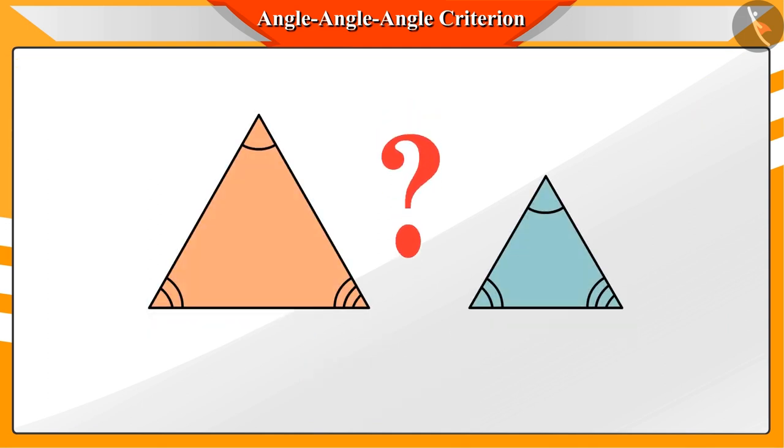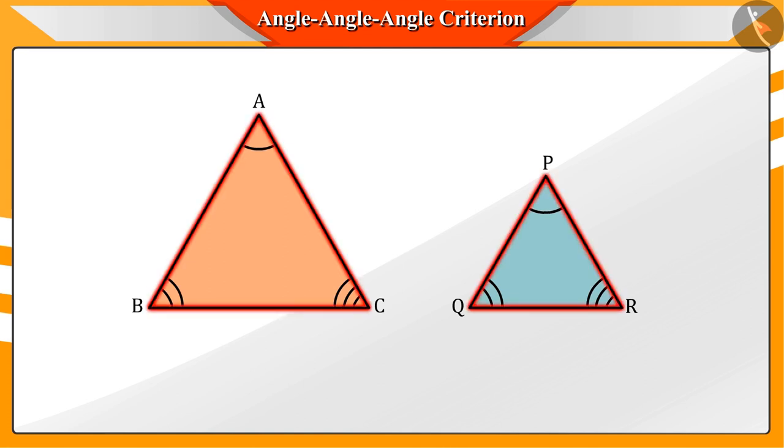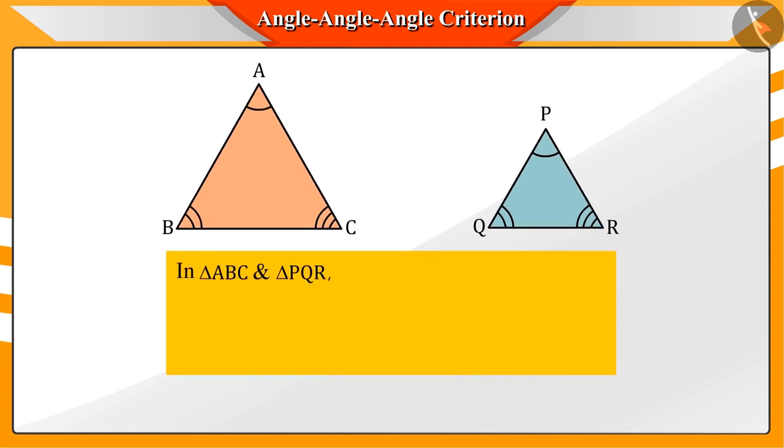When do we say that the given two triangles ABC and PQR are similar? In the previous video, we saw that two triangles are said to be similar when their corresponding angles are equal and their corresponding sides are proportional.